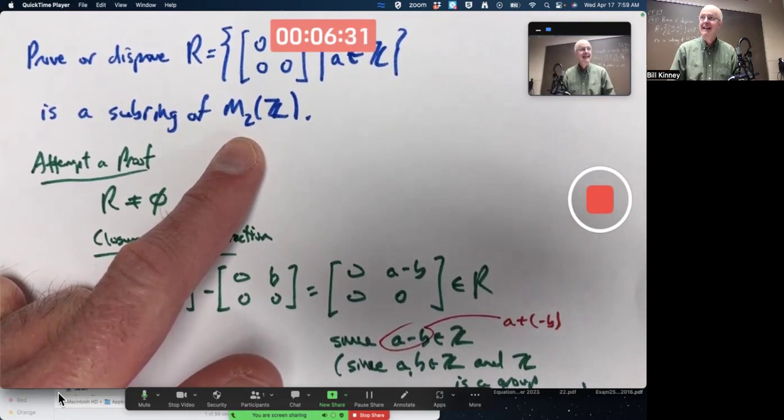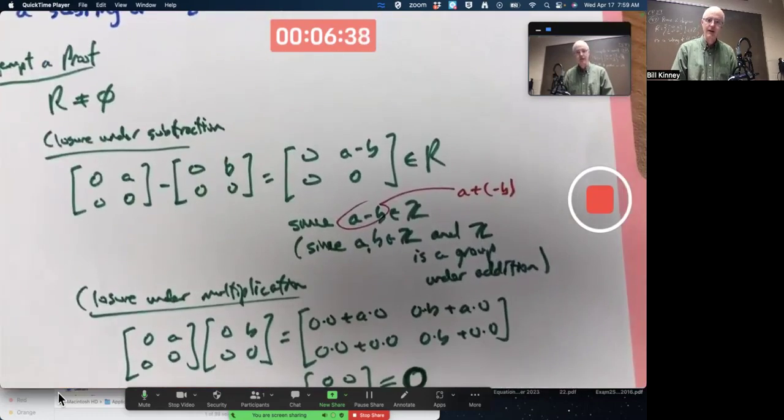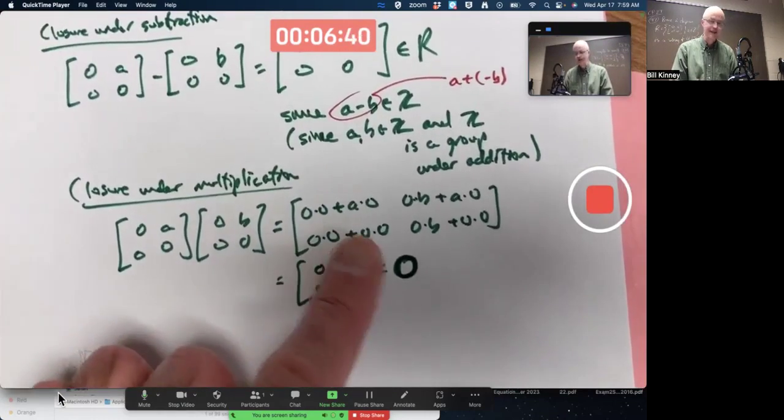The identity of that ring, the 0, is not the identity matrix. It's the 0 matrix because we're talking about it being a group under addition.